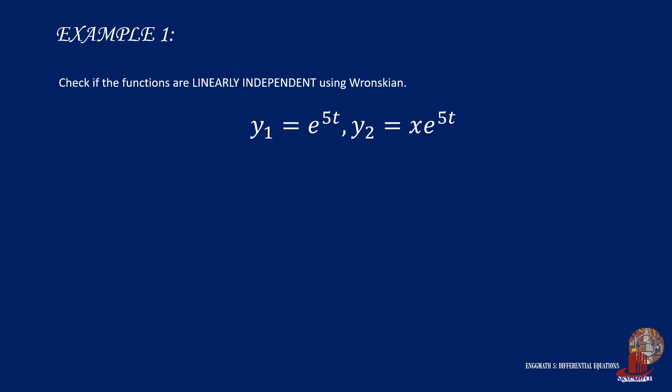Let's showcase some examples to understand the concept of this determinant better. Check if the two functions are linearly independent or not. The functions are y1 equal to e raised to 5t, and y2 equal to x times e raised to 5t, which are placed in the first row of the determinant.